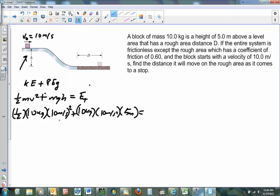So if I multiply these together, I end up getting 500 joules. If I add these here, I end up getting 500 joules for the potential. The total energy is 1000 joules.